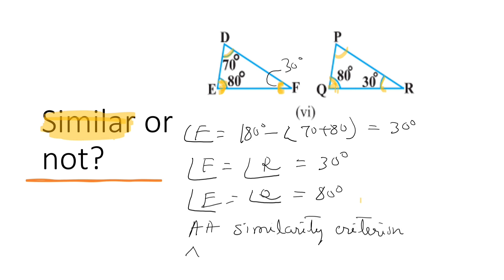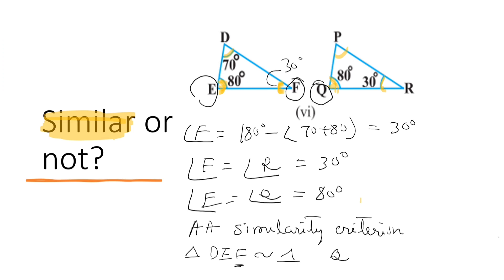Now let us write the symbolic form. The corresponding vertex of D is P, corresponding vertex of E is Q, and corresponding vertex of F is R. So triangle DEF is similar to triangle PQR.